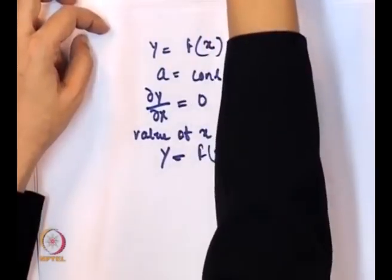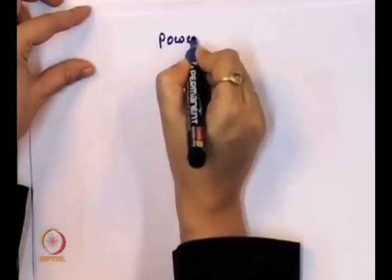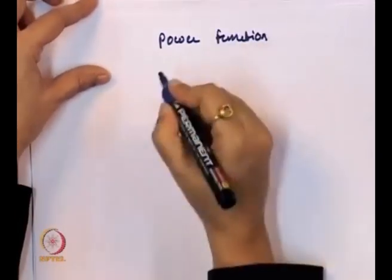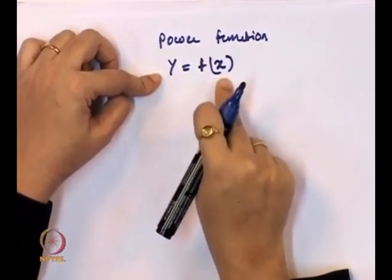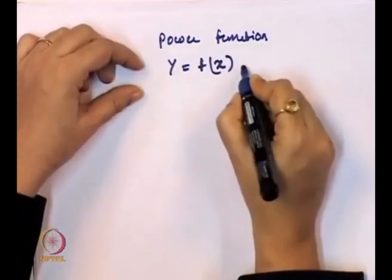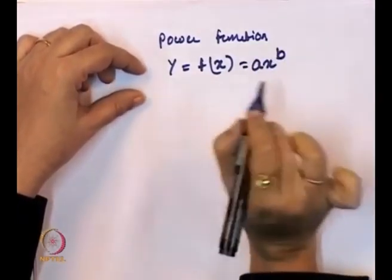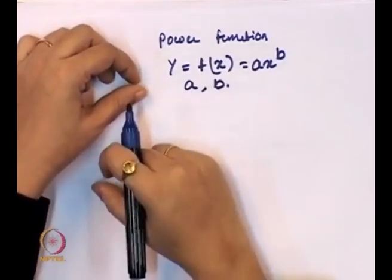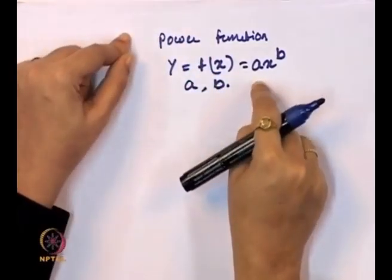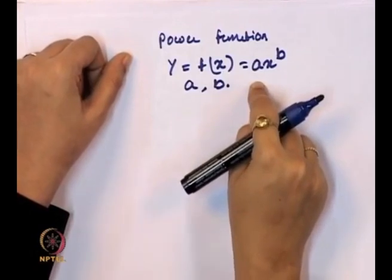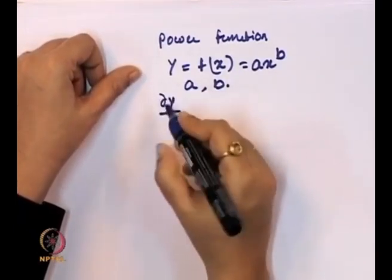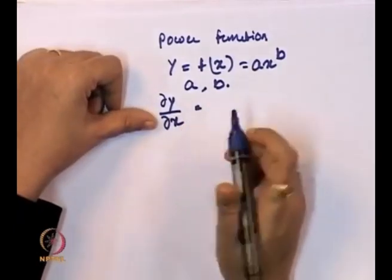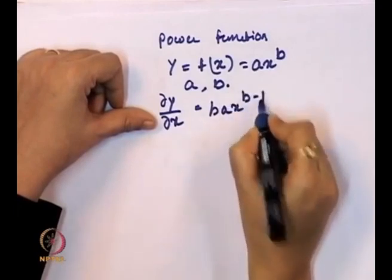Next, we discuss the derivative of a power function. The functional form is y = f(x) = ax^b, where a and b are constants. If we take the derivative, dy/dx = b·a·x^(b−1).